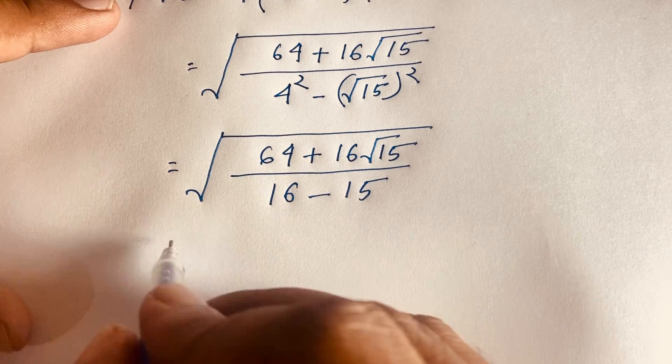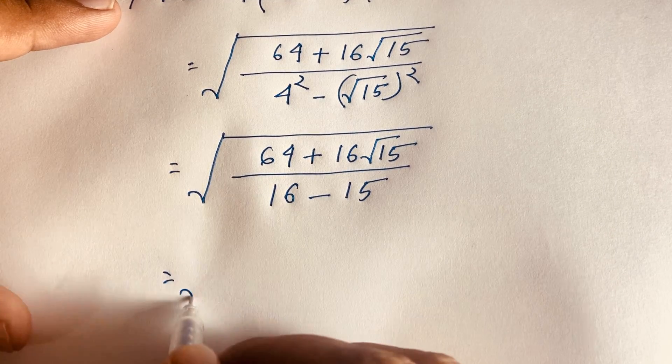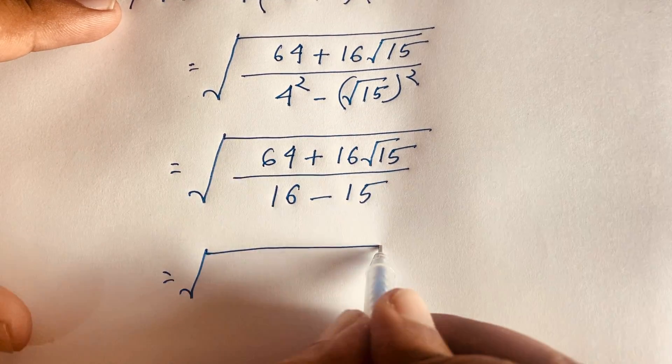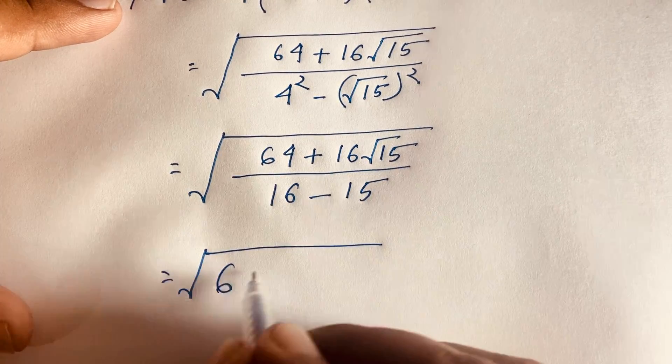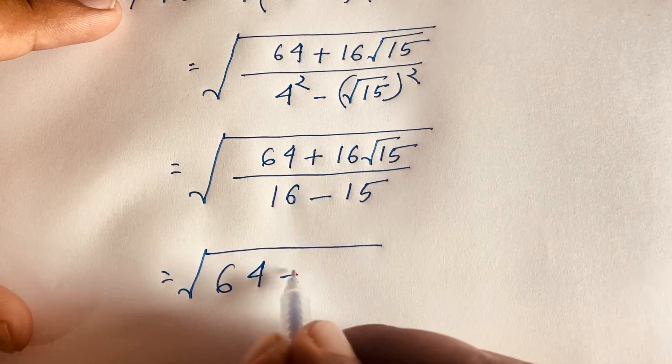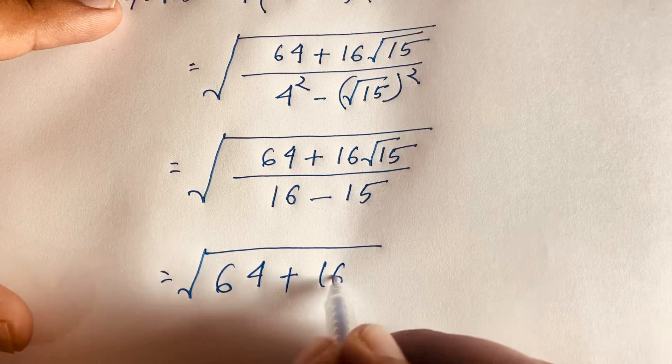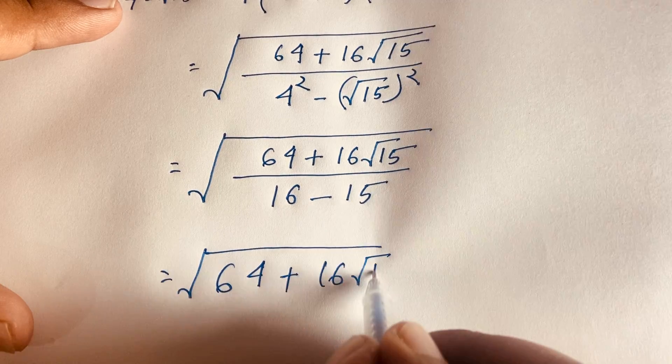So we find our next line: it will be square root of 64 plus 16 square root 15.